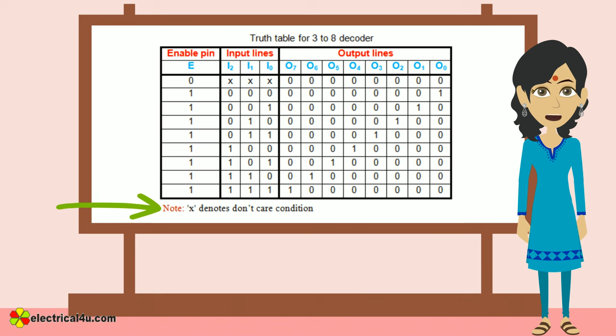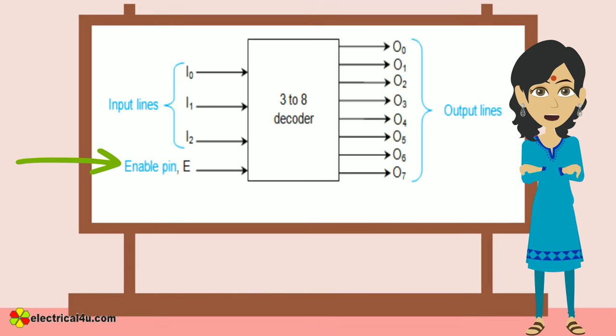Here denotes don't care condition. This indicates the off state of the decoder which can also be considered to be its reset state. Thus, one has to drive high on the enable pin to realize the functionality of the decoder.